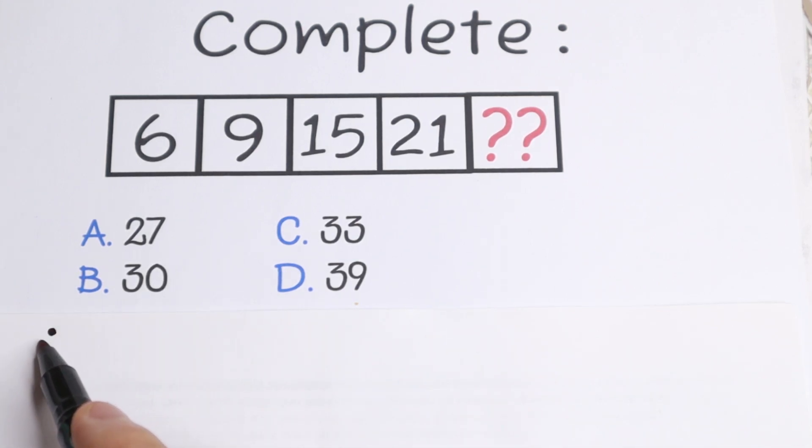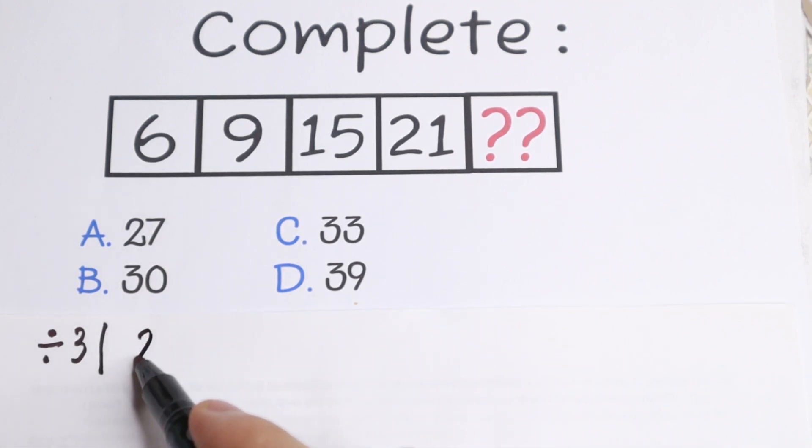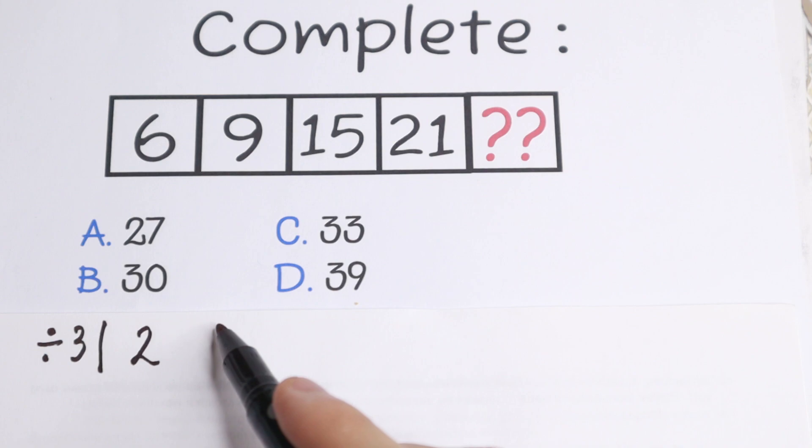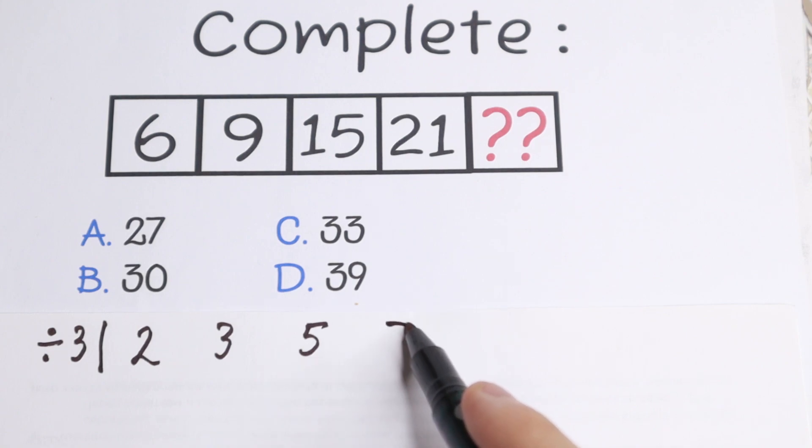If we divide all numbers by 3, so right here we're dividing by 3. If we divide 6 by 3 we will have 2. If we divide 9 by 3 we will have 3. 15 divided by 3 we will have 5. And 21 divided by 3 we will have 7.